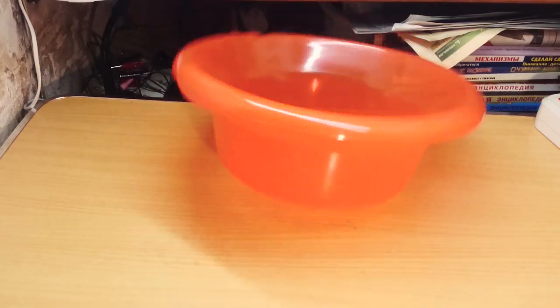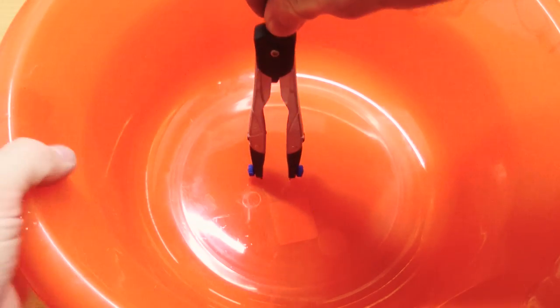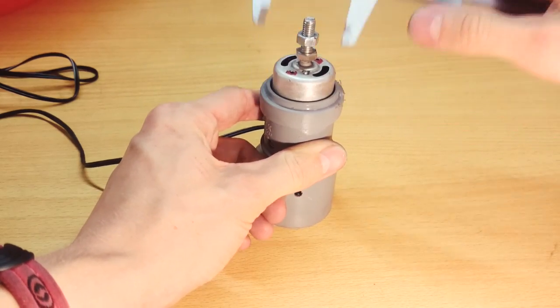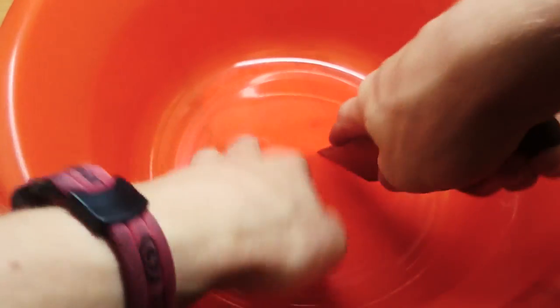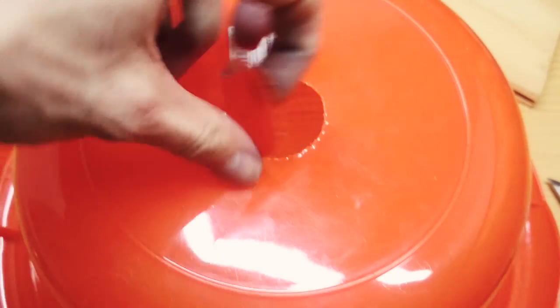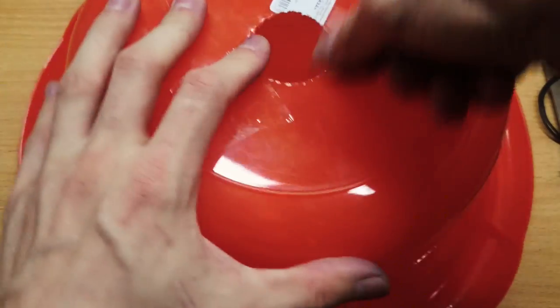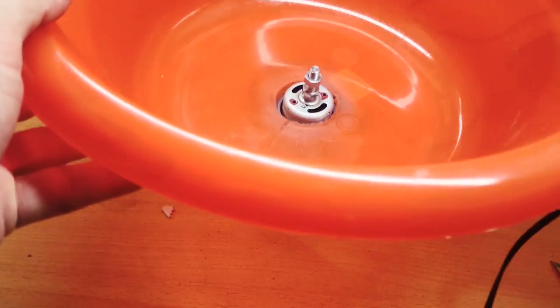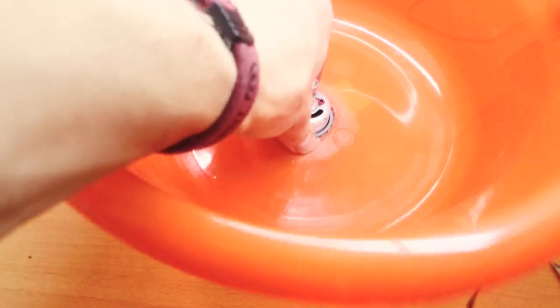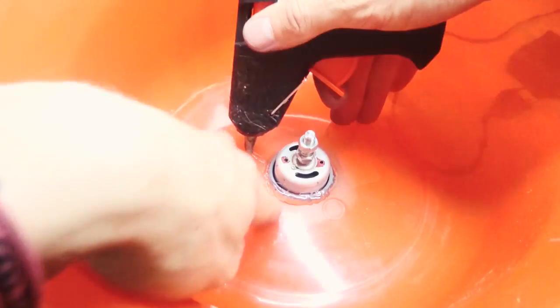It's time to assemble the candy machine. Draw a circle on the bottom of the plastic washbowl with the PVC coupling diameter. Cut off this big hole. I will glue the coupling to the washbowl with hot glue, so I'm grinding for better gluing. It's a better idea to use cold weld here because of heating.